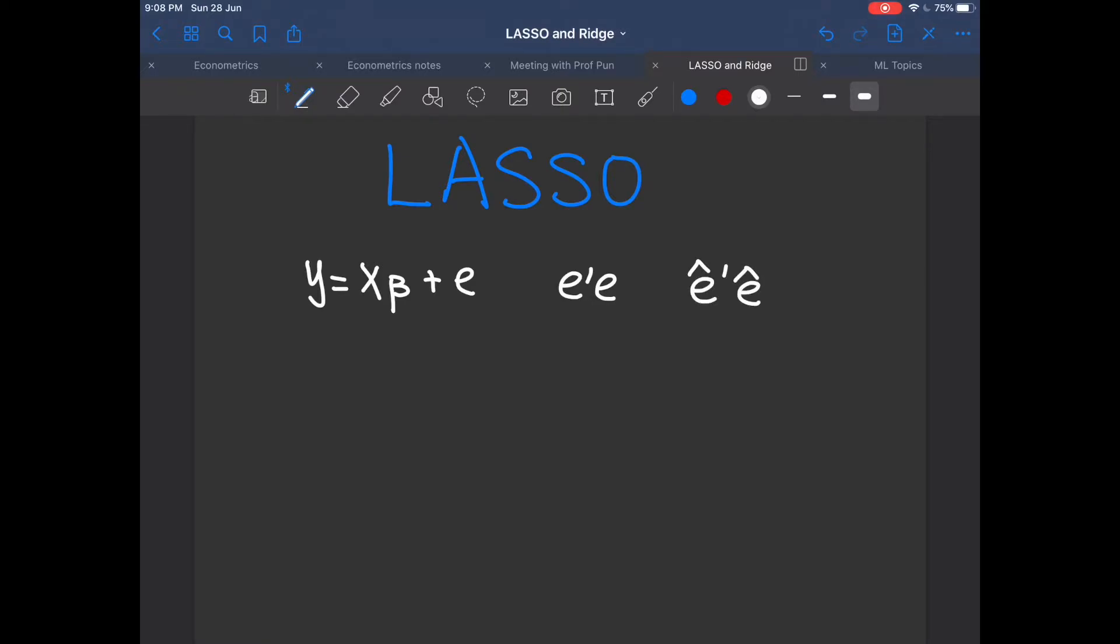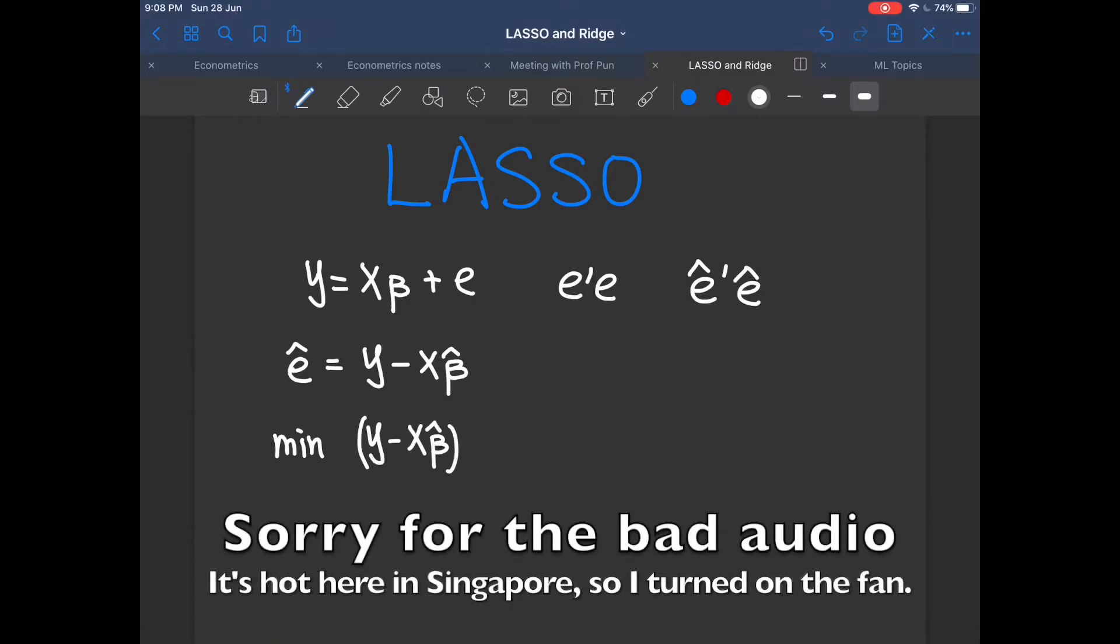And e hat can be expressed as y minus x beta hat, where beta hat is the estimator of beta. So the objective function is to actually minimize y minus x beta hat transpose multiply y minus x beta hat. And we minimize this expression with respect to beta hat.